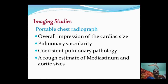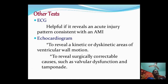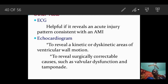Imaging studies include a portable chest radiograph showing cardiac size, pulmonary vascularity, co-existent pulmonary pathology, and a rough estimate of mediastinum and aortic sizes. ECG may reveal an acute injury pattern consistent with acute MI. Echocardiogram may reveal akinetic or dyskinetic areas of ventricular wall motion and can identify surgically correctable causes such as valvular dysfunction and tamponade.